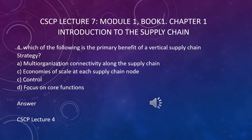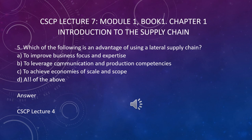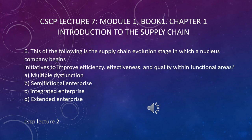Question number five: which of the following is the supply chain evolution stage in which the nucleus firm begins initiatives to improve efficiency, effectiveness, and quality within functional areas? A is multi-diverse functions, B is semi-functional, C is integrated enterprise, D is extended enterprise. The answer is B — semi-functional enterprise — because at that stage you start focusing on improving the efficiency of each department, like quality logistics and quality marketing.